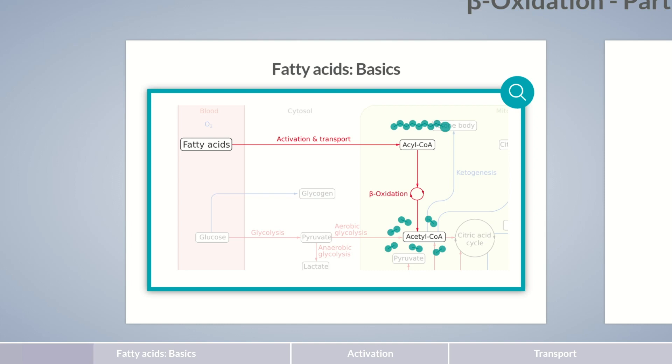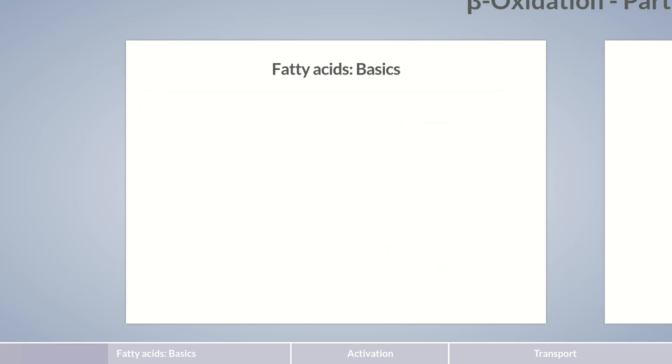Afterwards, acetyl-CoA can, for example, enter the citric acid cycle, which also takes place in the mitochondrial matrix. To help you understand the reactions during beta-oxidation in the following episode of this course, let's freshen up the most important facts about fatty acids.